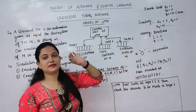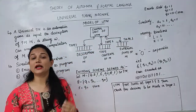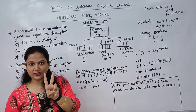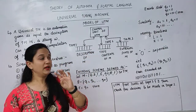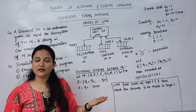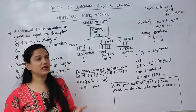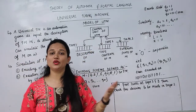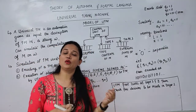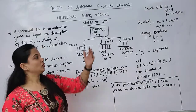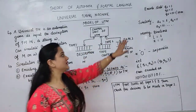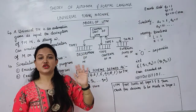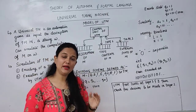Now let's see how we encode these elements. States are encoded as follows: Q1 is represented by '1', Q2 is represented by '11' (double one), Q3 is represented by '111' (triple one), and so on — the number of ones corresponds to the state number. Similarly, input alphabets are encoded: a1 as '1', a2 as '11', a3 as '111', a4 as '1111', and so on — each alphabet is encoded this way.